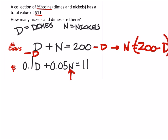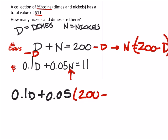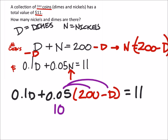So I got 0.1D plus 0.05. N, though, is replaced with 200 minus the number of dimes. This is going to equal 11 bucks. So to solve for D, I need to distribute my 0.05. That's 10 minus 0.05D. And I still have the 0.1D. That's a positive 10 equals 11.